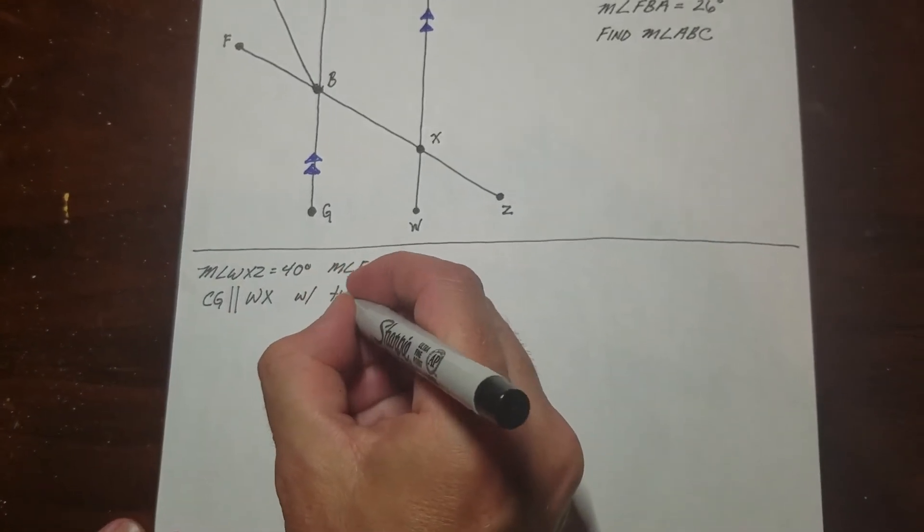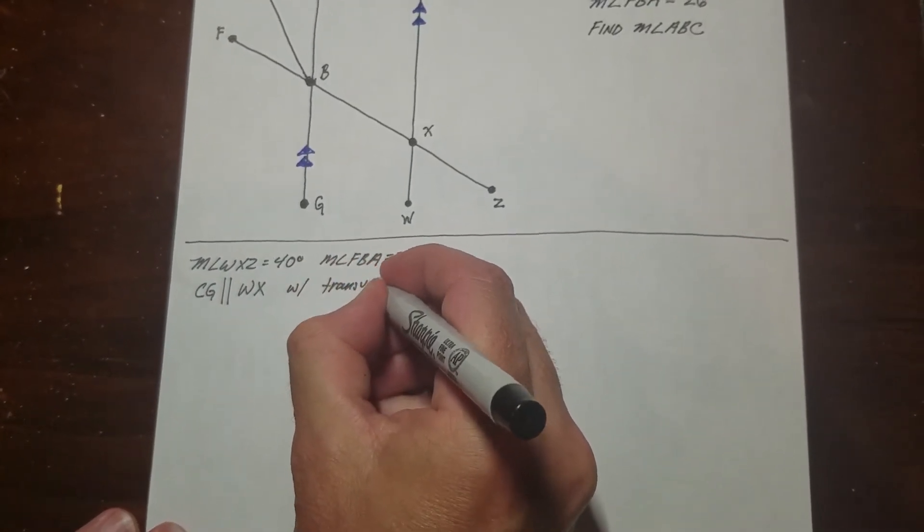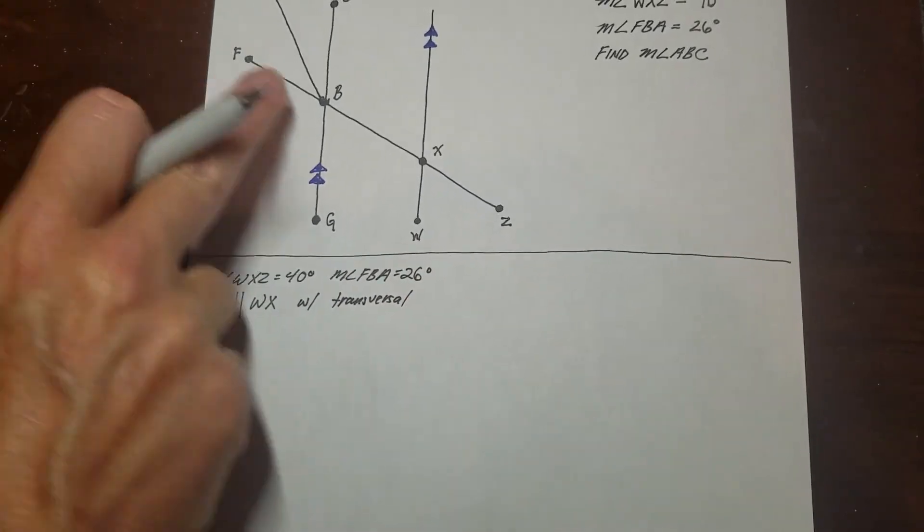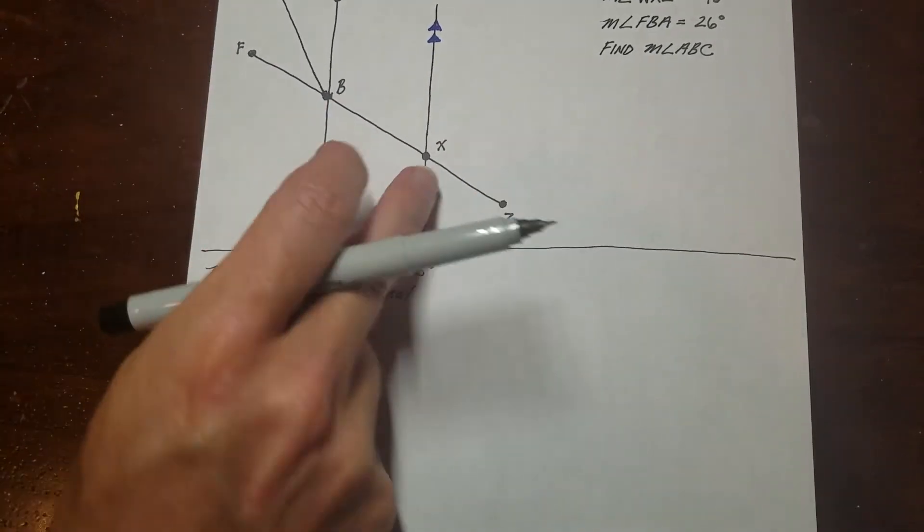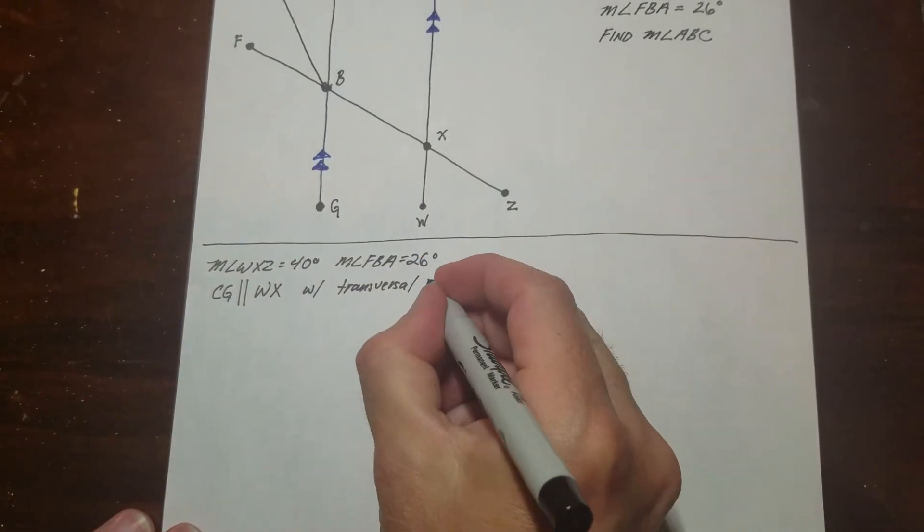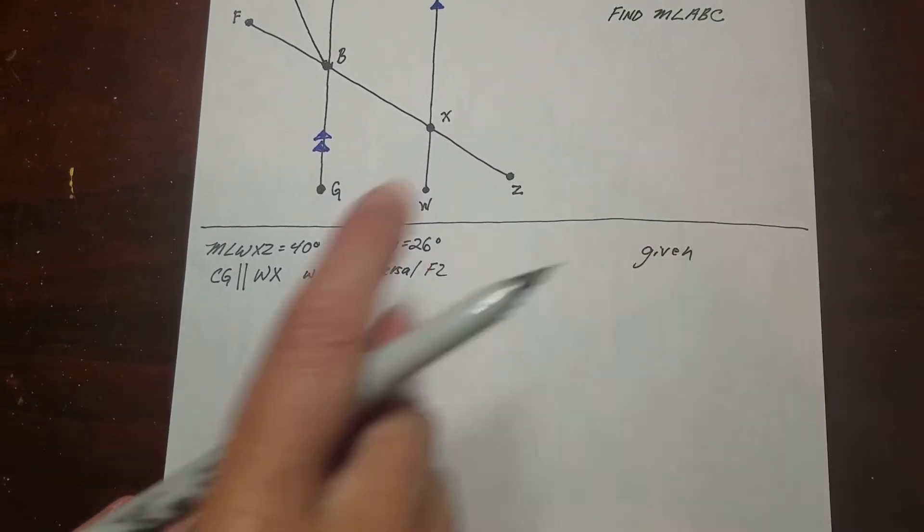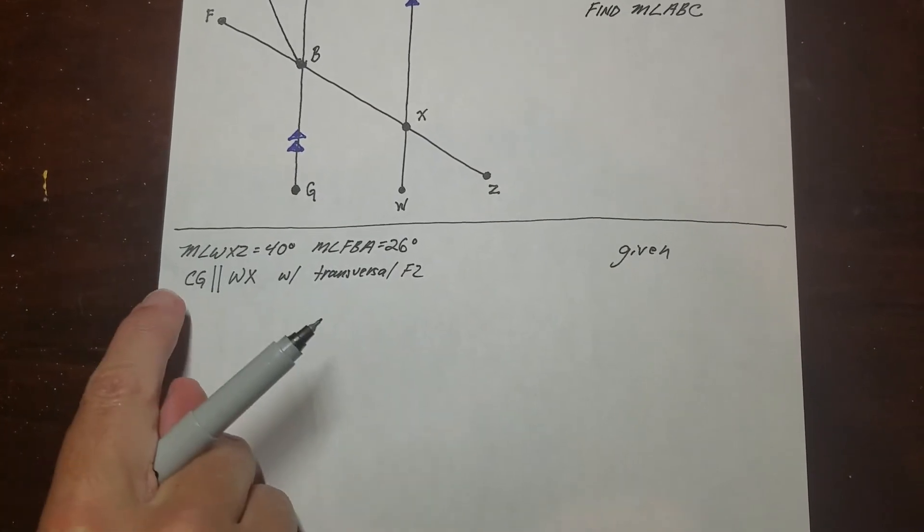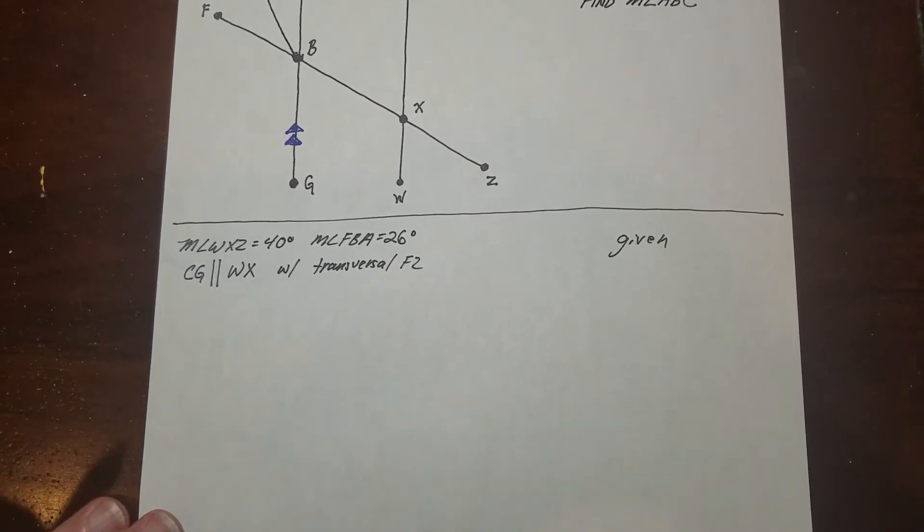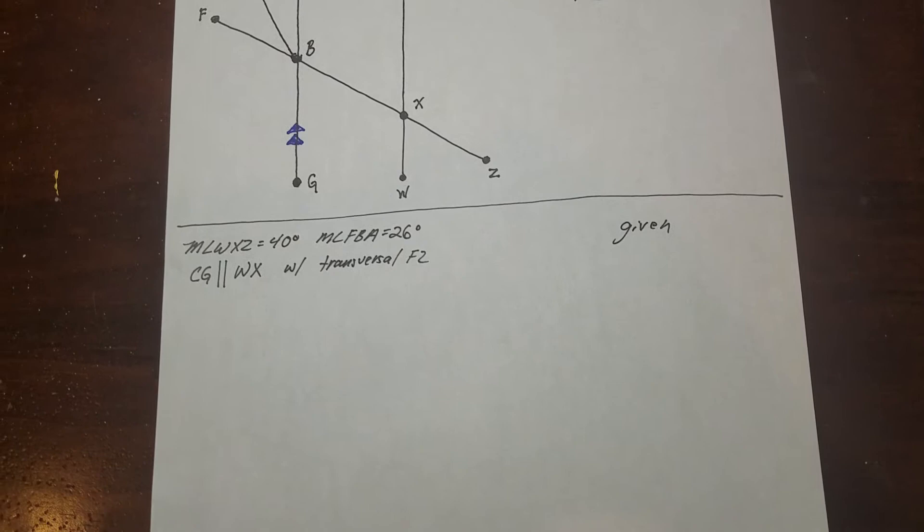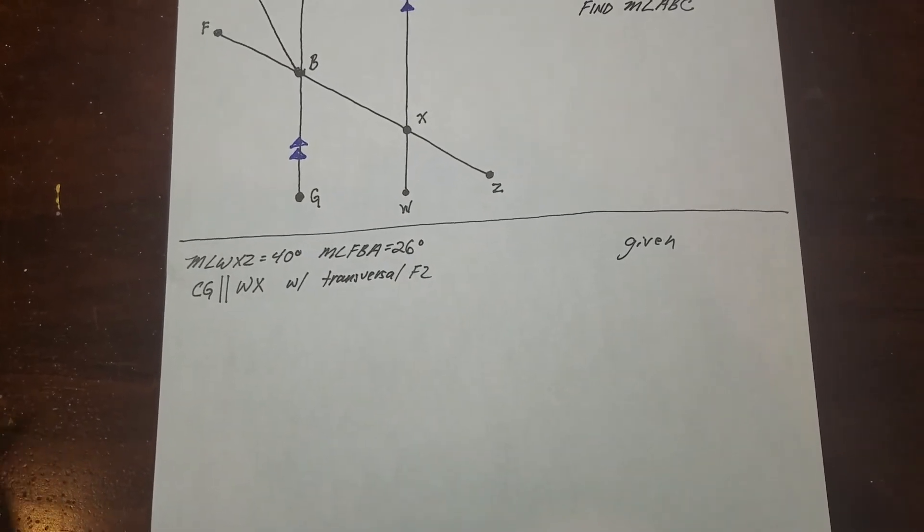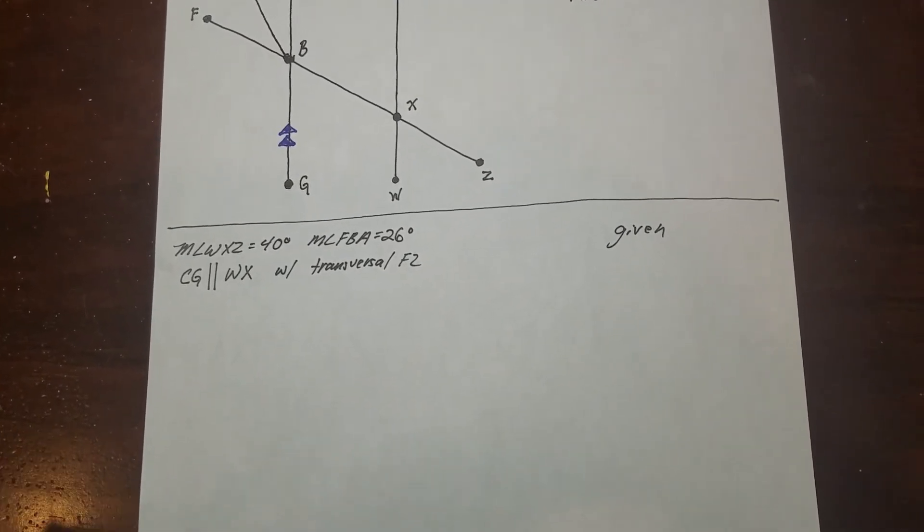And I'm going to put the transversal, which is this line crossing the two parallel lines. I'm going to call it FZ. And that's given. So this is really important to state in your givens because it opens up all of those possibilities in terms of the angle relationships that are associated with parallel lines and a transversal. You can use that now.